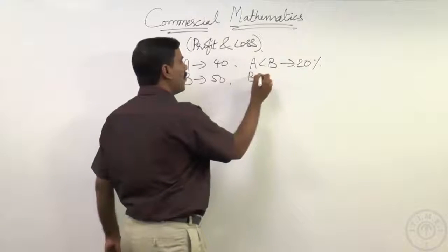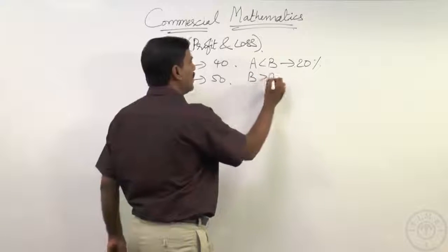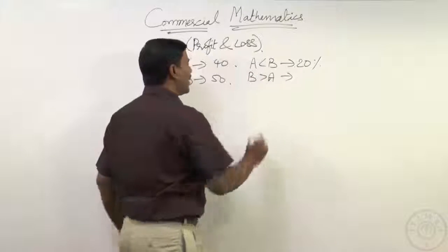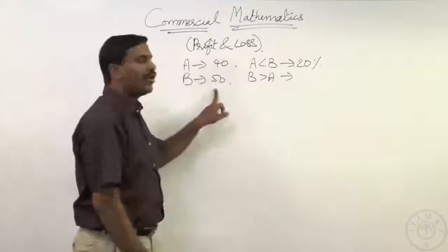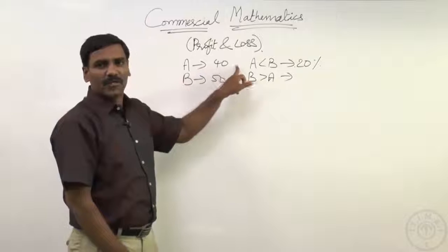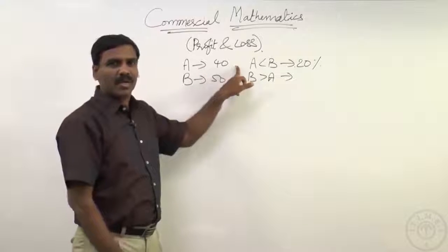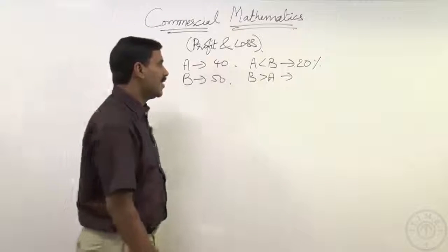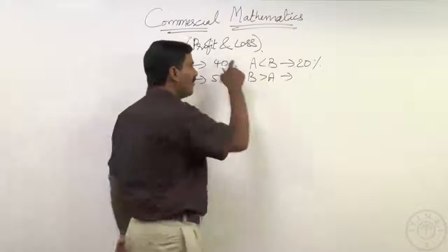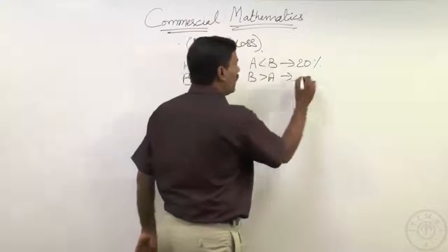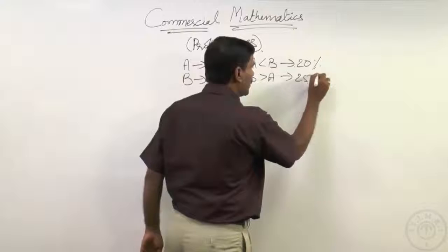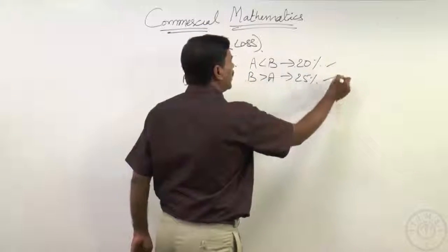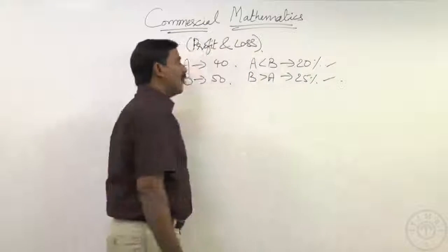In the same way, B is how much more than A? B clearly got 10 more with respect to what A scored, that is 40. So 10 on 40 will be 1 by 4, and 1 by 4 means 25 percentage. These calculations we already did.